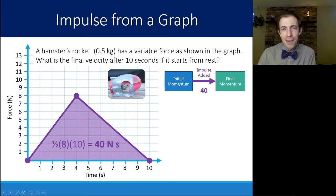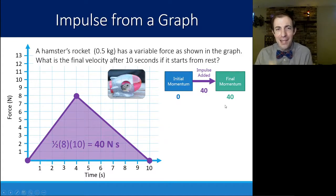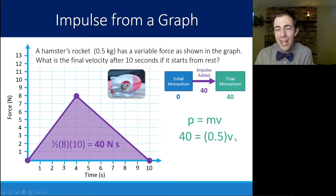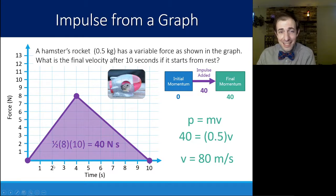The rocket started from rest, so initial momentum is zero, meaning final momentum equals 40 kilogram meters per second. Using momentum equals mass times velocity: 40 equals 0.5 kilograms times velocity, so solving for v gives about 80 meters per second. That adorable hamster in his rocket, after 10 seconds of throttle-up throttle-down force, will be going roughly 80 meters per second.